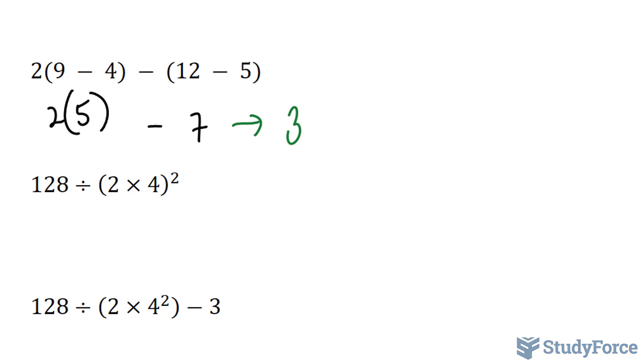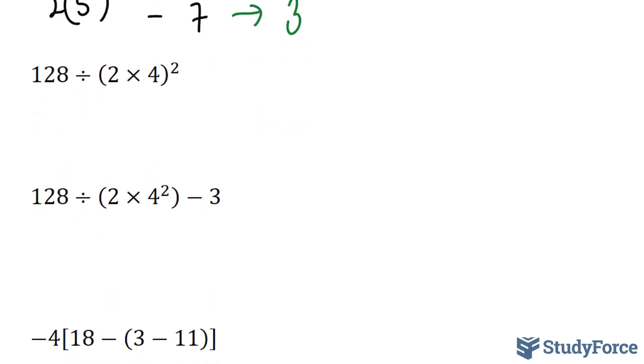We're halfway through. Now we have 128÷(2×4)²-3. This is our first example where we have an exponent. Respecting the acronym BEDMAS, we have 2 times 4, it's 8, and then the next thing is exponents. 8 to the power of 2 is like saying 8 times 8, that's 64. So we have 128 divided by 64. 64 is half of 128, so our answer is 2.